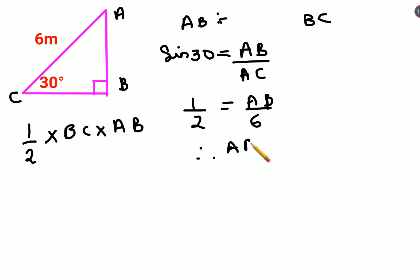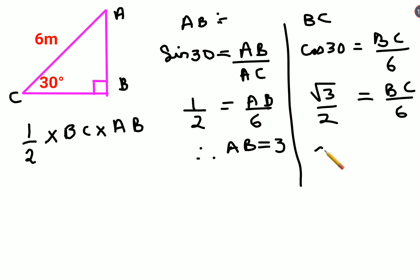For BC, we can use cos 30. Cos 30 is adjacent side, which is BC, over hypotenuse, which is 6. The cos 30 value in trigonometry is √3/2, equals BC over 6. Multiplying both sides by 6, we get 3√3 as the value for BC.